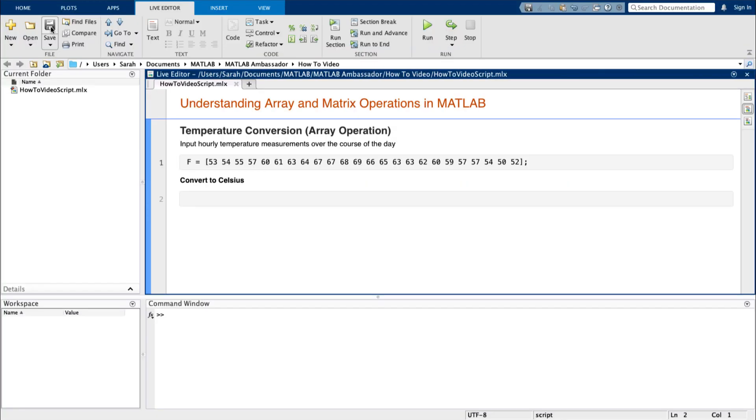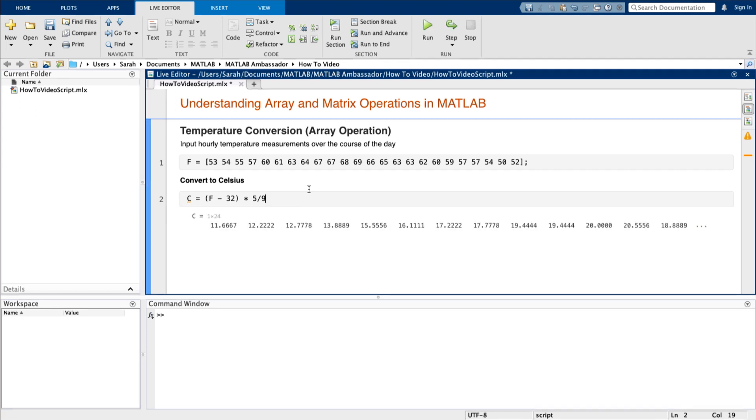An example of this would be if you measured the outside temperature every hour for 24 hours and stored the data in MATLAB. If I wanted to convert the temperature to Celsius, I could do the same operation on each element of my vector at once. C equals F minus 32 times five-ninths. And don't forget the parentheses. We can see that each element in our temperature array went through the same operation.